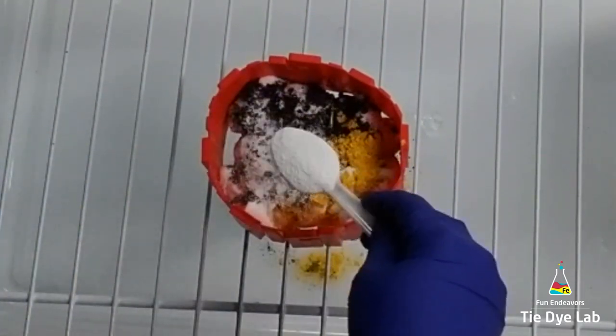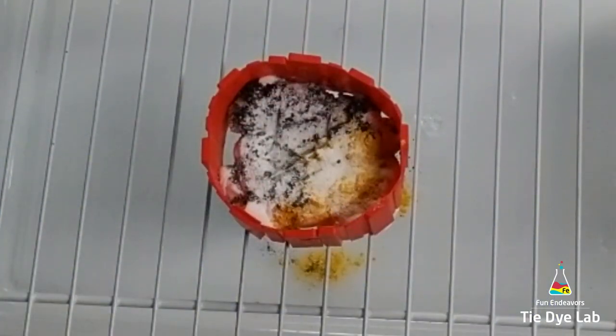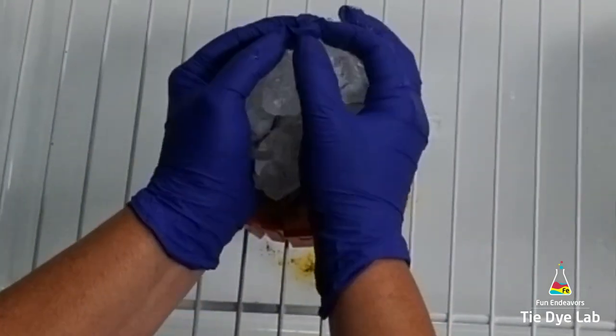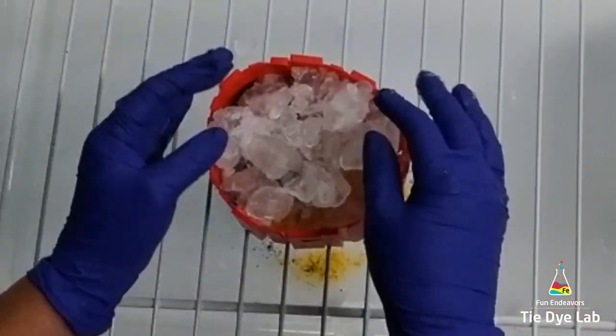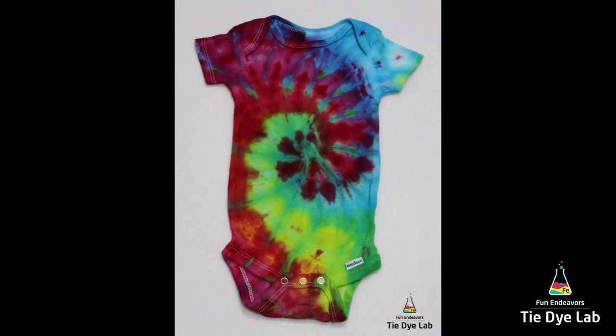Then I'm going to put another light sprinkle of soda ash over the top, followed by the ice. I came back after my layer of ice had melted and the color went all the way through the onesie, so I didn't add another layer of ice. I just went ahead and let it continue to process.